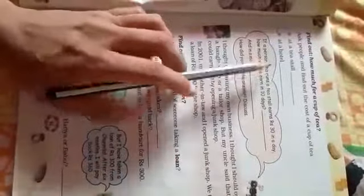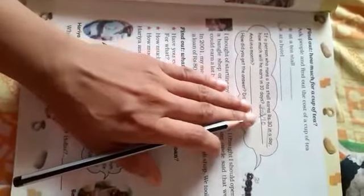If a person who runs a tea stall earns 30 rupees in a day, how much money does he earn? Now, how much will he earn in 10 days? Per day earning 30. So 10 days earning, you can write 30 multiply by 10. Here we will use the unitary method. He earns 30 rupees per day, so in 10 days we will multiply 30 times 10 and we can write 300 rupees.